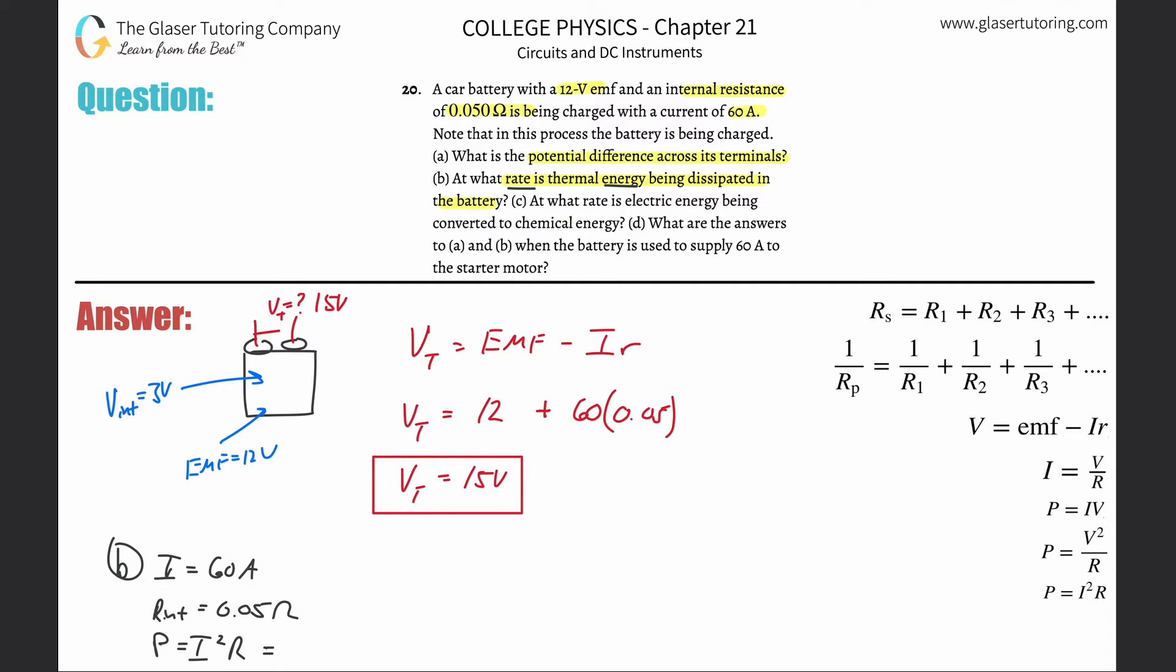And that's simply going to be now 60 squared times then 0.05. This is inside the battery. That's what they're asking. So this is just 60 squared times then 0.05. So it's 180. 180 watts.